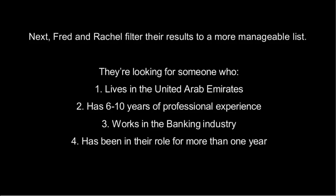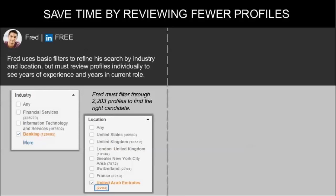After finding all the candidates that fall under Finance and Director, Fred and Rachel want to refine their search results in order to get a more manageable list. They are now looking for someone who lives in the United Arab Emirates, has six to ten years of professional experience, works in the banking industry, and has been in their role for more than one year. Fred can only use basic filters, such as industry and location, to refine his search. But he must review profiles individually to see other criteria, such as years of experience and years in current role, which means he has to spend a lot of time searching through 2,203 profiles to find the right candidates.